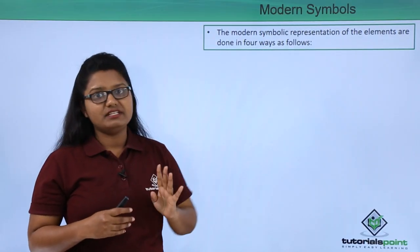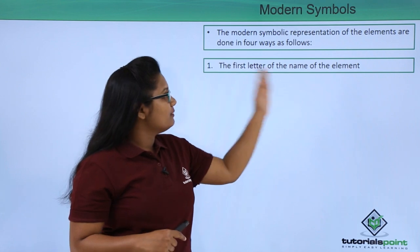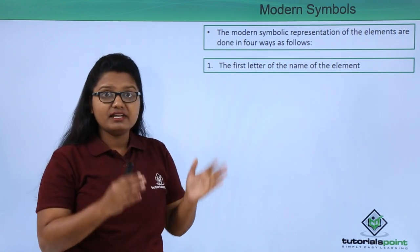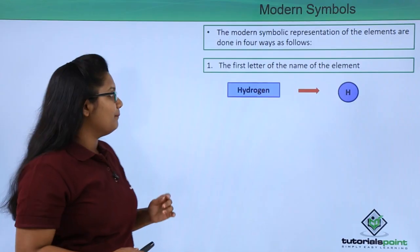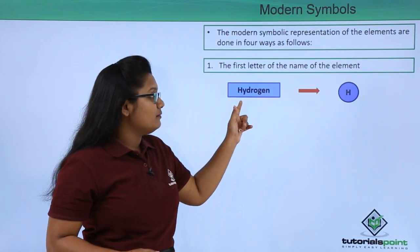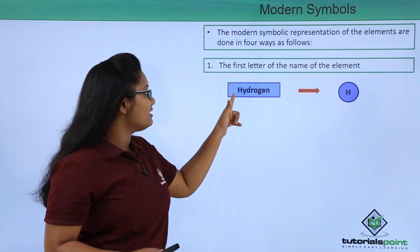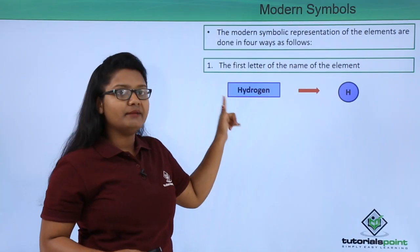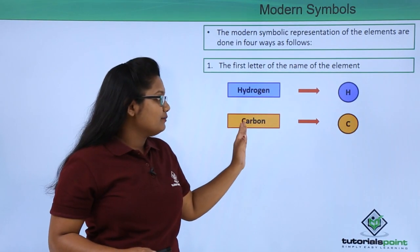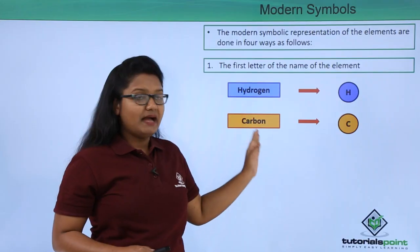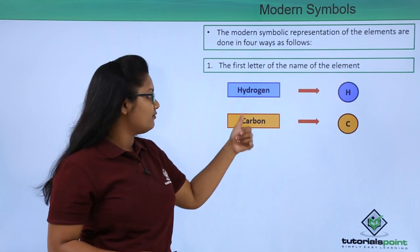We write the symbols of elements in four particular ways. The first way is to write the first letter of the name of that element. For example, the hydrogen atom is represented by capital H, which is the first letter of the name hydrogen, and a carbon atom is represented by capital C, the first letter of carbon.